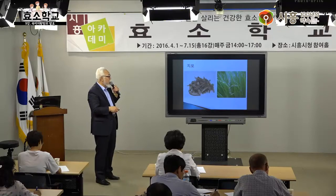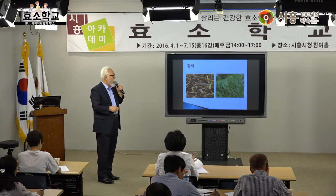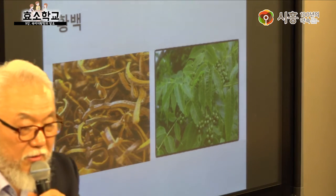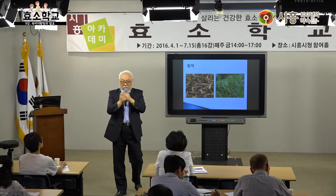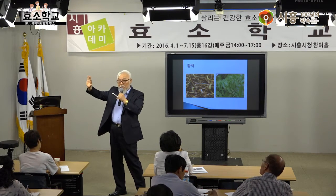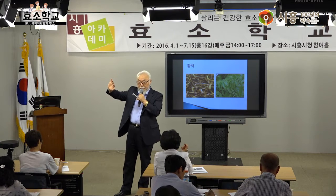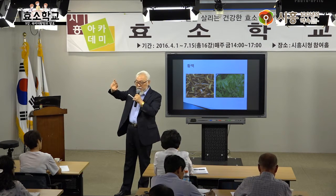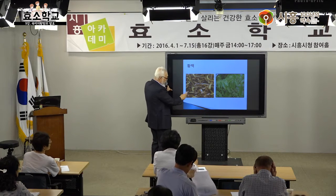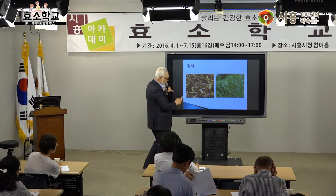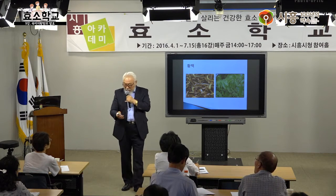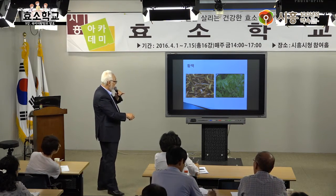황백나무를 껍데기를 벗기면 속 안이 아주 노랗게 보여요. 그 껍데기를 약재로 쓰는 거예요.